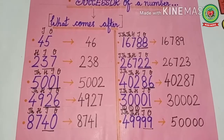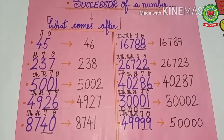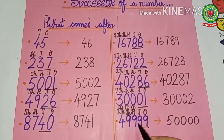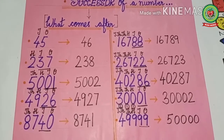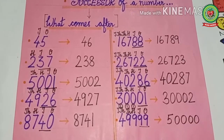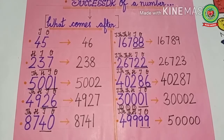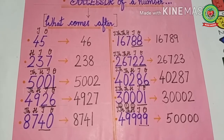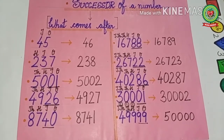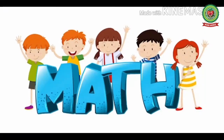But kids, you should know your counting very well. You should know that after 49999 comes 50000, after 39999 comes 40000, and after 79999 comes 80000. I hope you have understood the concept of writing the successor of any number. Now complete the pages that have been given to you in your snap homework book. Thank you.